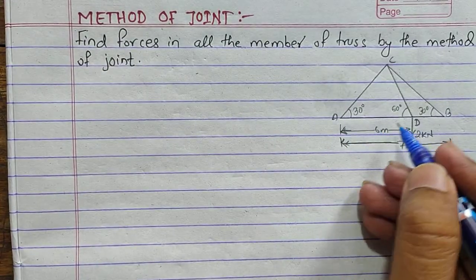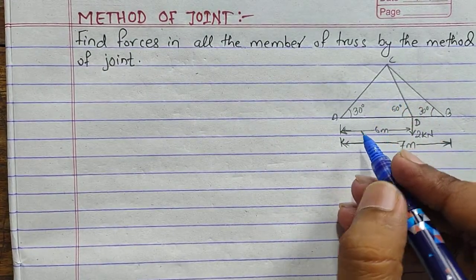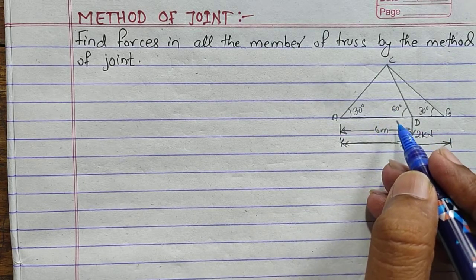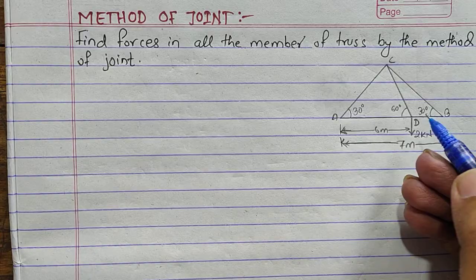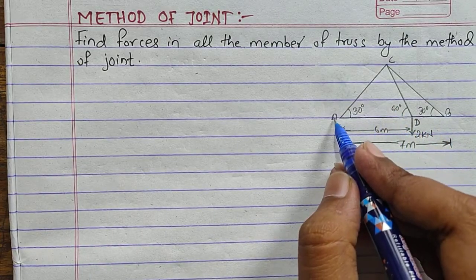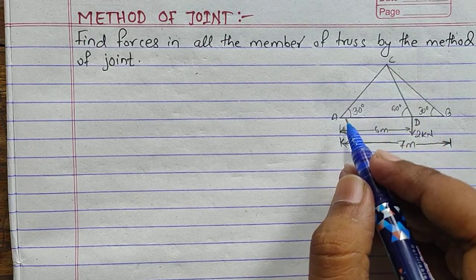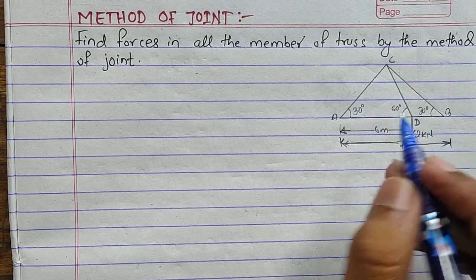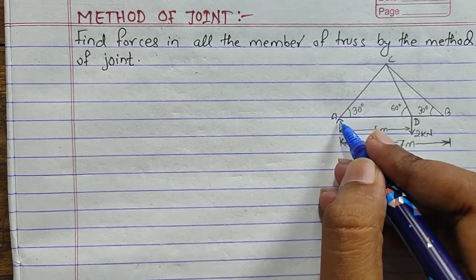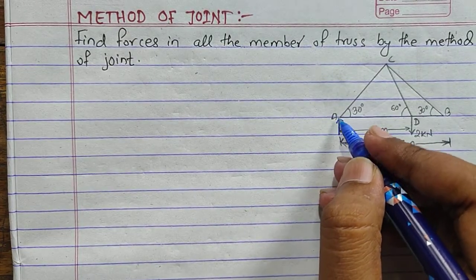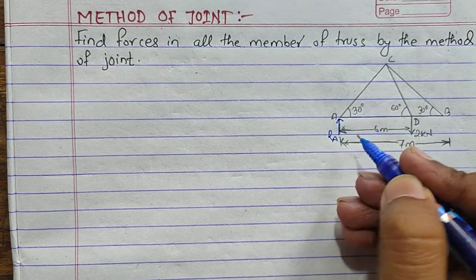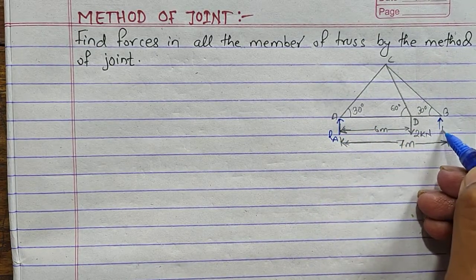In the solution of this numerical we have to first check whether the given truss is a cantilever truss or other than cantilever truss. As you can see, this truss is not a cantilever truss, which means we need to find the reactions at A and B. If it were a cantilever truss then we would not need to find the reactions. So, let us assume that the reaction at A is RA and the reaction at B is RB.